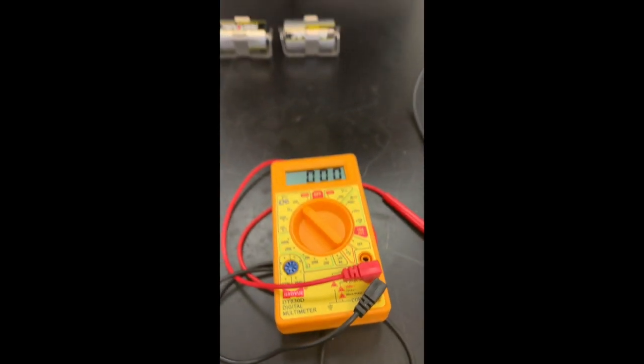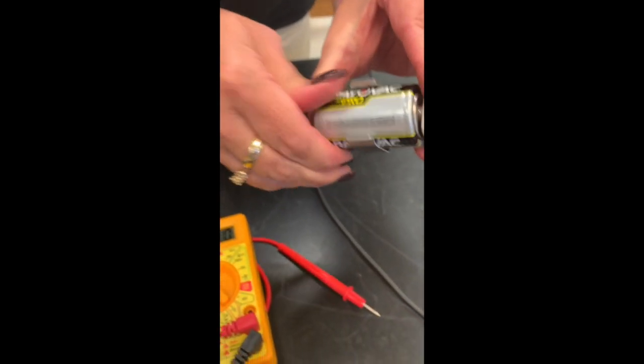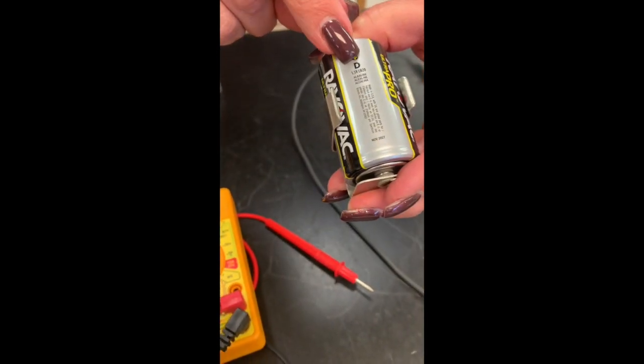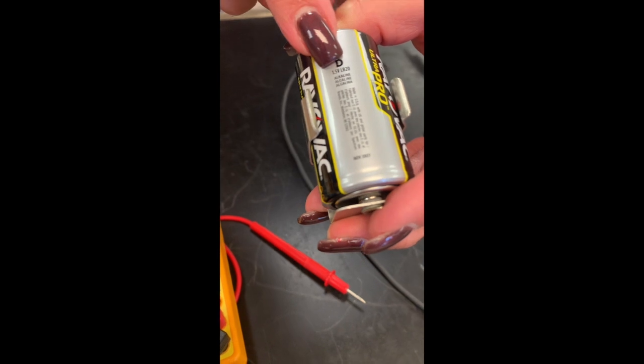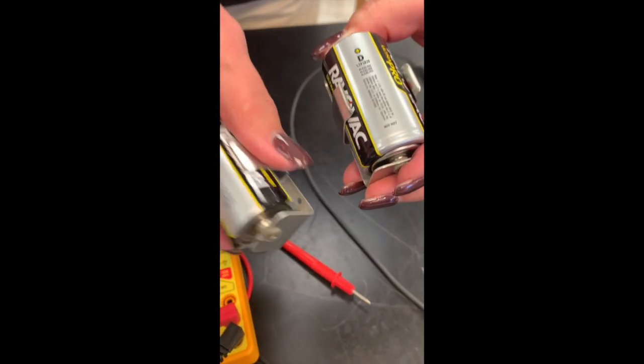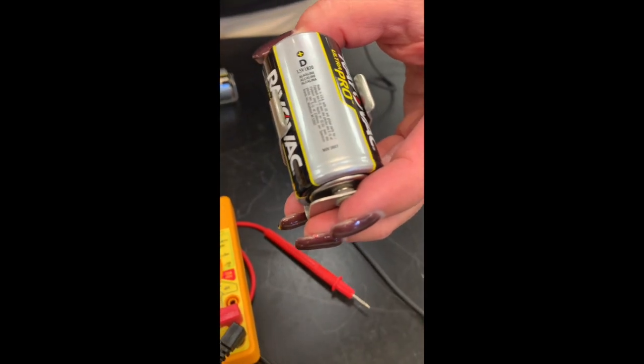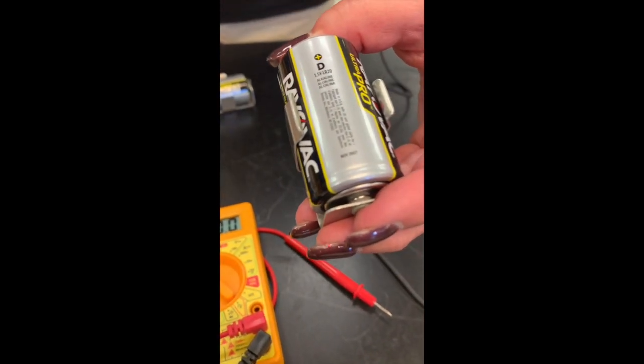So if you look on the side of an actual battery it will tell you how many volts there are and so this D cell is 1.5 volts and each D that you add adds another 1.5 volts. And we know that when you increase voltage it increases current.